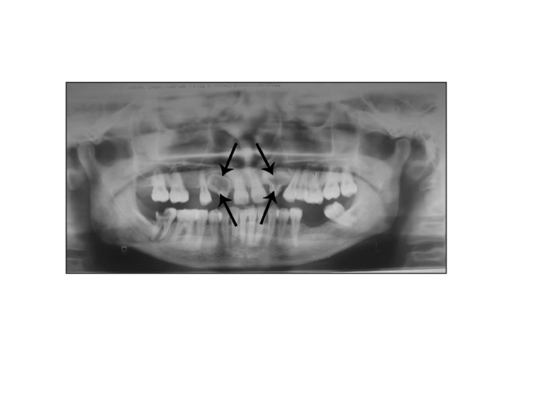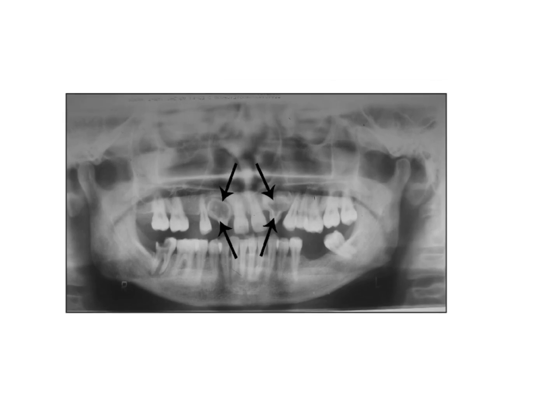Right now what we saw was an IOPE; however there may be instances where they give you an OPG, like what I have put up here, and ask you to identify the structure. Again if you can notice, you can see two tooth-like structures. The one on the outside is marked in green, whereas the one inside is highly radiopaque.